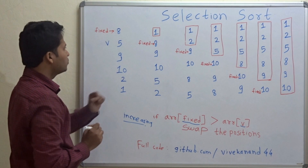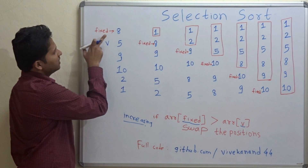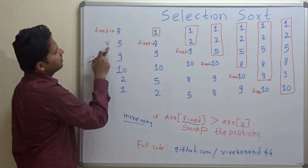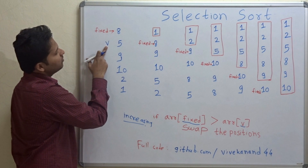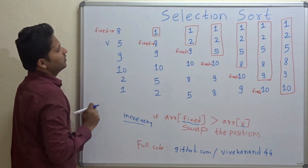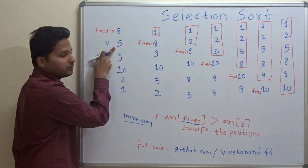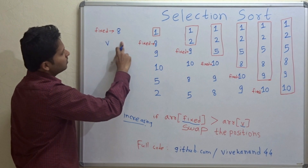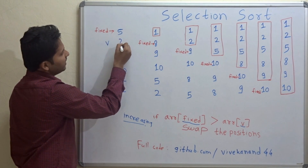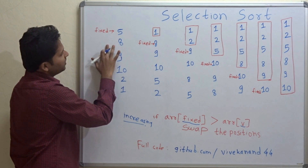Let's see how to do this. The value at the fixed position is 8 and the value at the variable pointer position is 5. Let's compare these values — 8 is greater than 5, so we have to swap them. 5 will come here and 8 will come here. Now the variable pointer will increase.